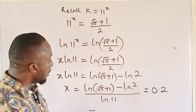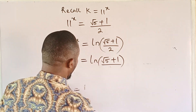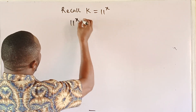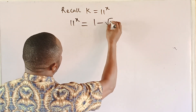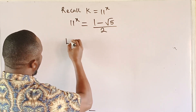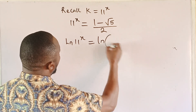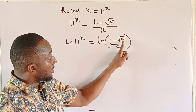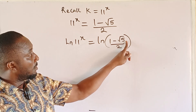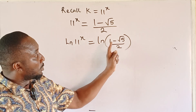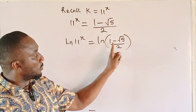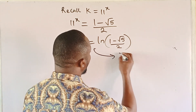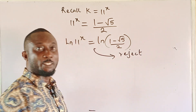For k₂, we have 11^x equal to (1 − √5) / 2. Since √5 is approximately 2.236, subtracting it from 1 gives a negative value. The argument of a logarithm is not defined for negative numbers, so we reject this solution. That's the end of Method 1, and the answer is x = 0.2.